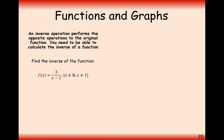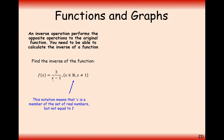Let's look at how we actually compute an inverse function. We have a function here, 3 over x minus 1, where x is any real number but does not equal 1 — because if it were to equal 1, you'd get 0 on your denominator. The way we find an inverse function, which you may remember from GCSE, is to write out y equals your function and then rearrange to make x the subject.